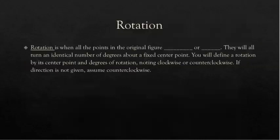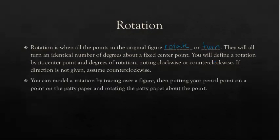Our next type of transformation is rotation. Rotation is when all the points in the original figure rotate or turn — they will all turn an identical number of degrees about a fixed center point. That center point can be on the image or off the original figure. You define a rotation by its center point and degrees of rotation, and note whether you're turning it clockwise or counterclockwise. If a direction is not given, we will always assume it's counterclockwise.